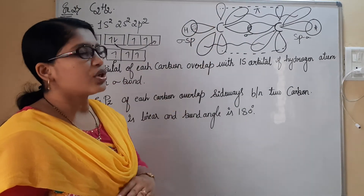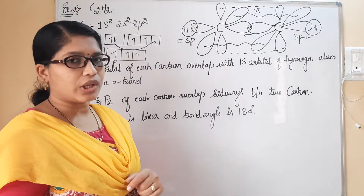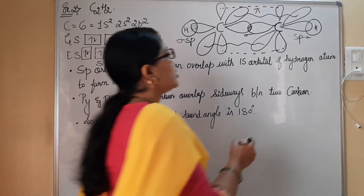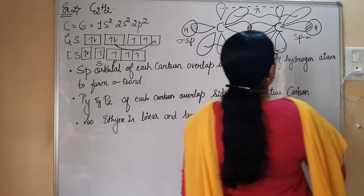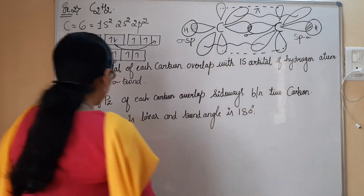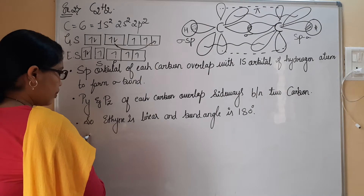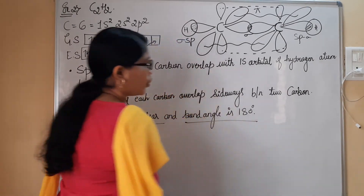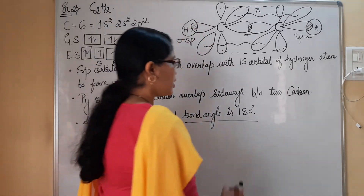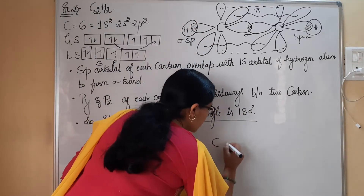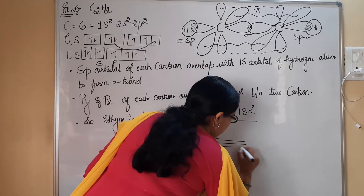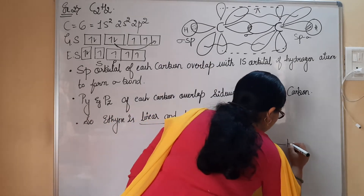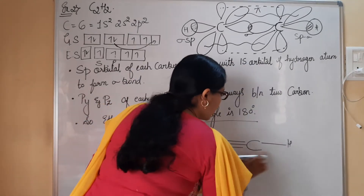Looking at the structure of the C₂H₂ molecule after hybridization, we can see two sigma bonds. The ethane molecule is linear and the bond angle is 180 degrees. The structure shows the carbon atoms bonded to each other and to hydrogen atoms. We know there are two sigma bonds existing in the molecule.